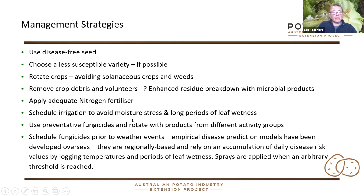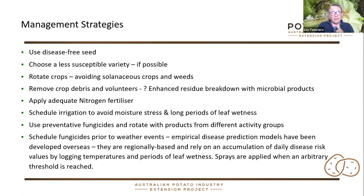Scheduling irrigation to avoid moisture stress and long periods of leaf wetness is important. As I've talked about, eight hours of leaf wetness is required for infection. At some stages, maybe you might want to irrigate earlier in the day so that the crop can dry out before the evening — so you're not going to have this period where the crop has wet leaves through the evening. That might be another strategy you'd want to utilise.